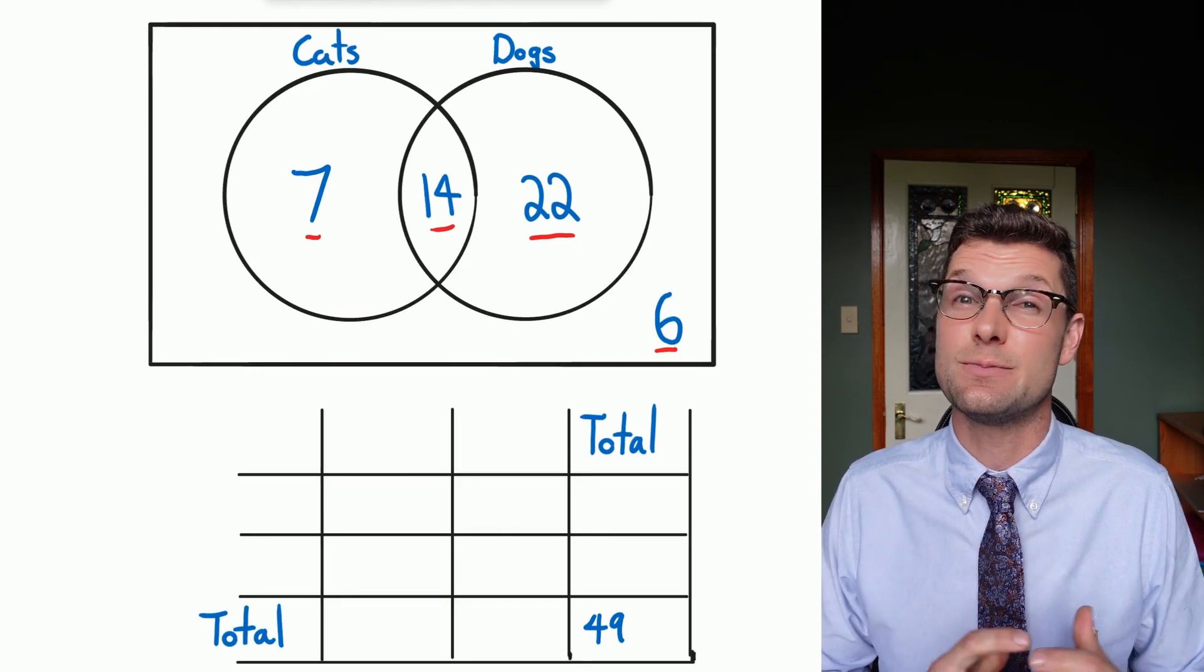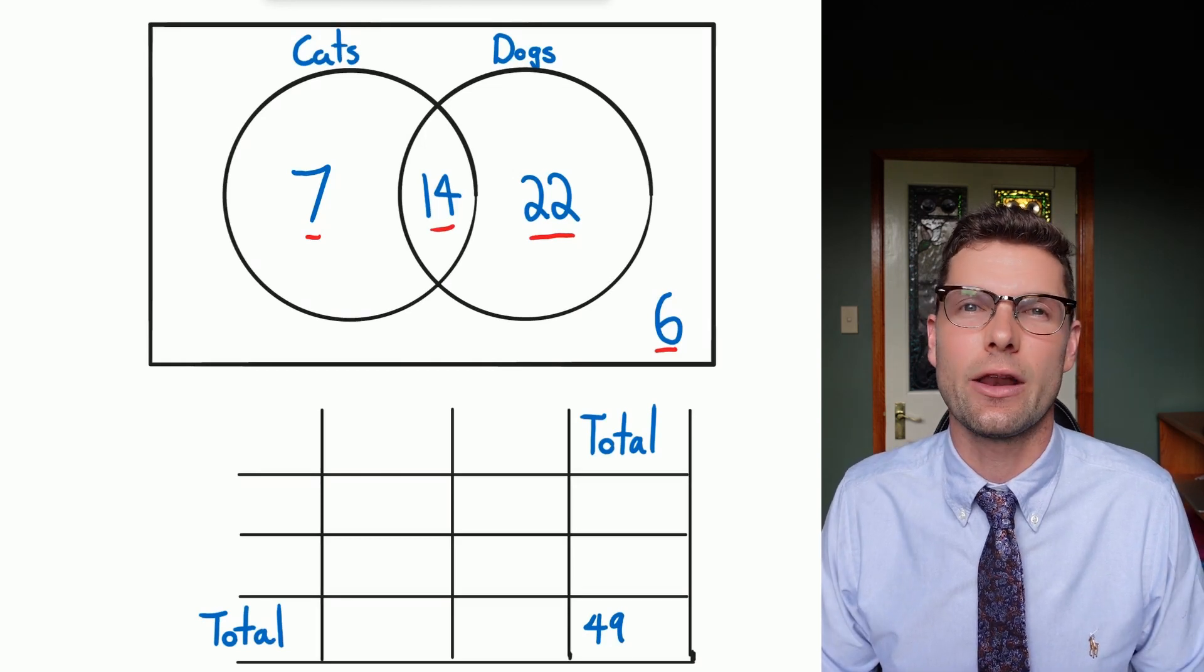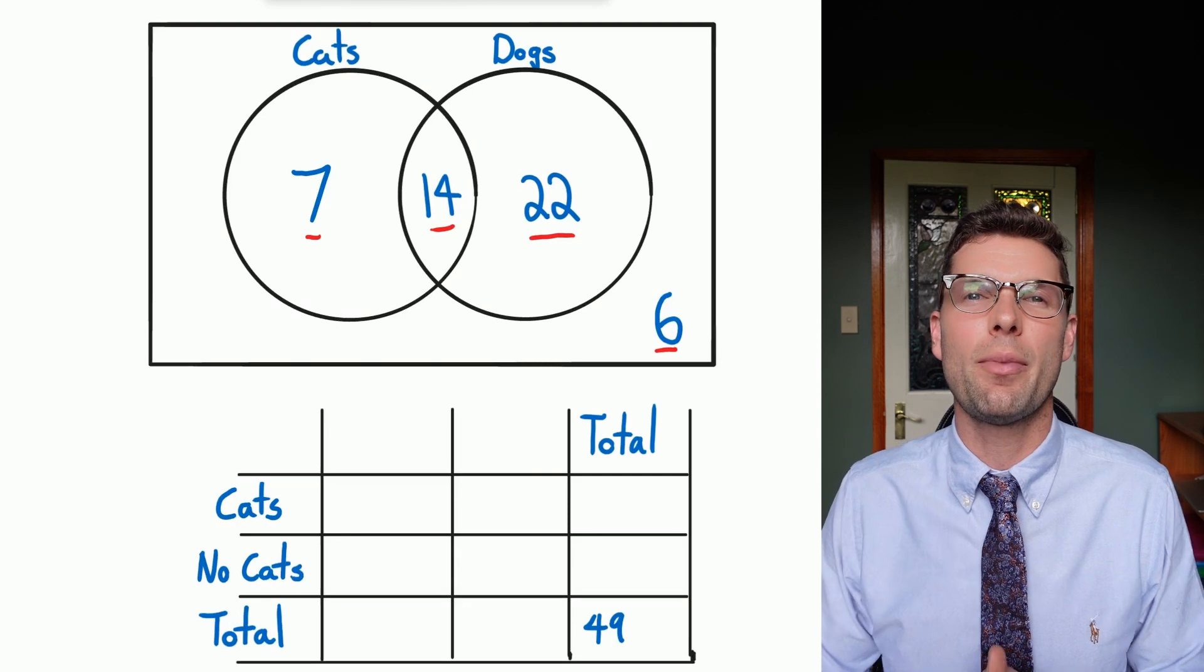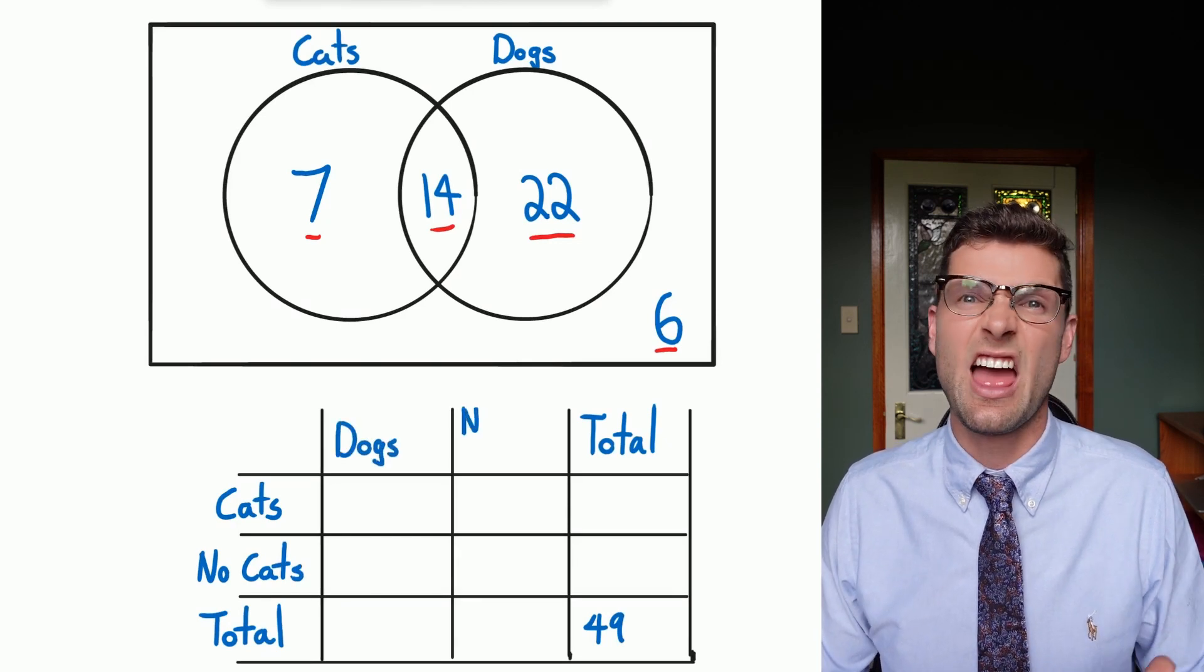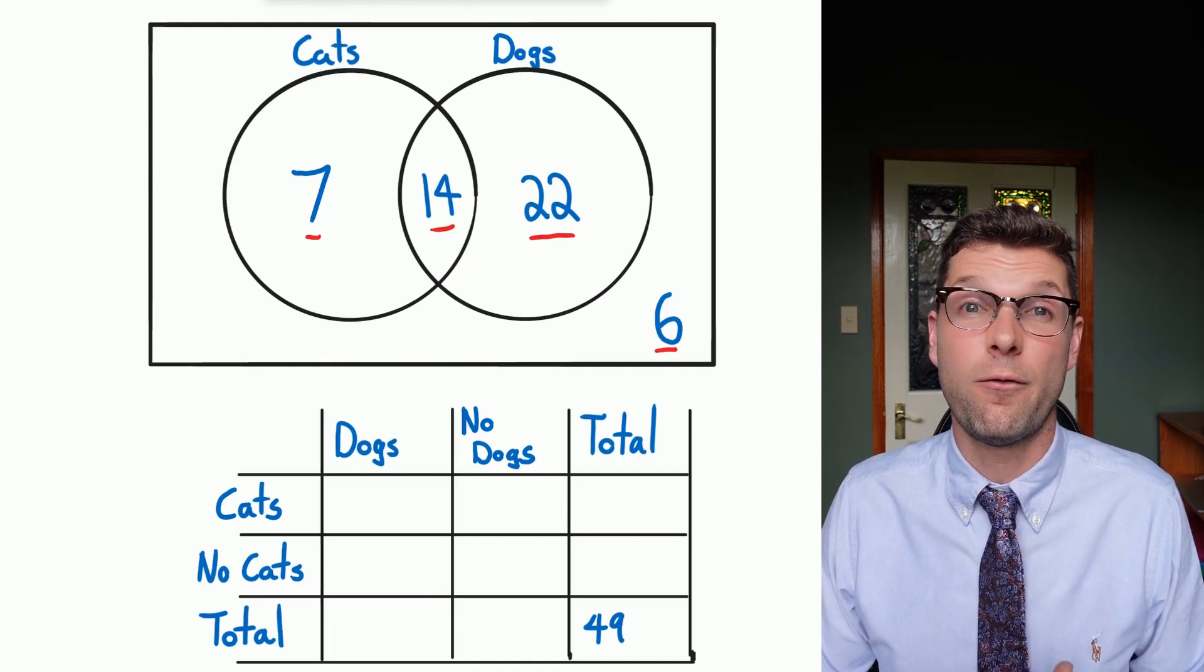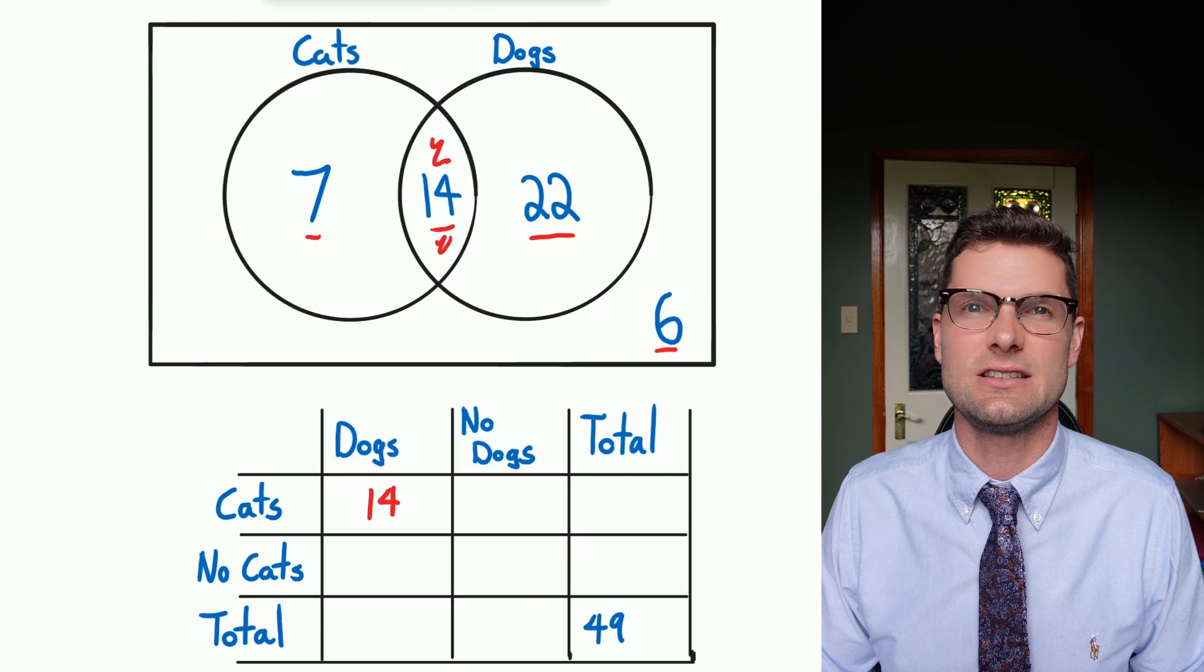Now I've got these bits of information I just have to fill in the other things which do make quite a lot of sense. So on this side I'm going to have cats and no cats, and on the top I'm going to have dogs and no dogs. And from there it all flows pretty easily. Because I've got 14 people that have cats and dogs, they're going to go in that first cell up there.